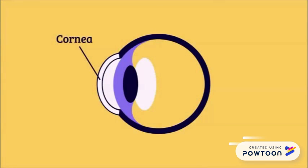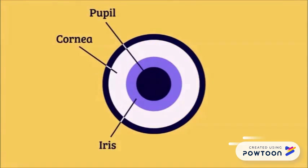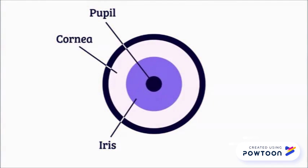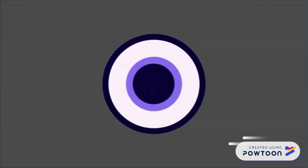Next, the light rays pass through an opening called the pupil. The pupil is a hole that runs through the colored part of your eye. The colored part is called the iris. It controls how wide the pupil is and how much light can pass through your eyes. In bright light, the iris narrows the pupil, reducing the amount of light that enters the eye. In dim light, the iris widens the pupil to let in more light.